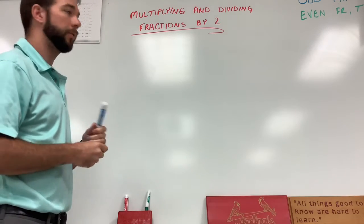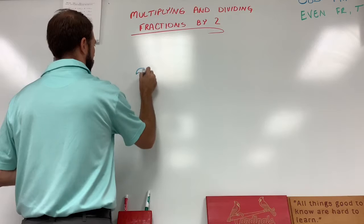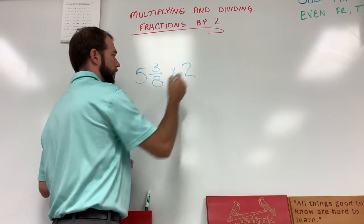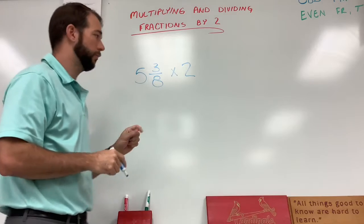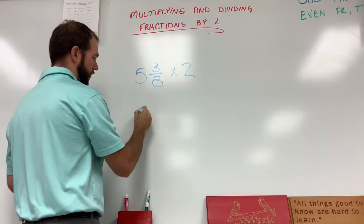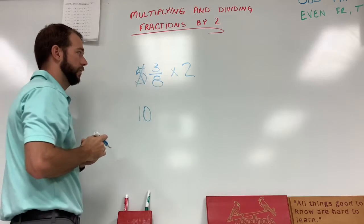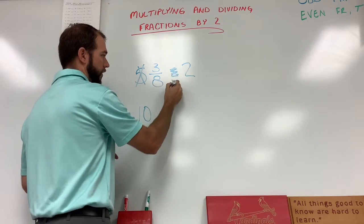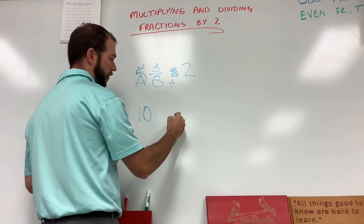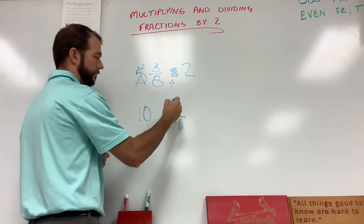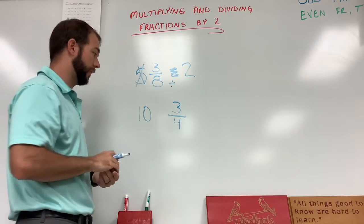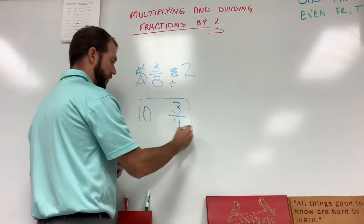Let's do another one with a whole number: five and three eighths times two. Again, we have two math problems — the whole number times two and the fraction times two. Five times two gives us ten; we're done with our five. Now for the fraction, we divide the bottom number by two: eight divided by two gives us four, and the three stays the same. Now we have a proper fraction — odd number on top, even number on bottom — which means it's also simplified. So ten and three fourths is our answer.